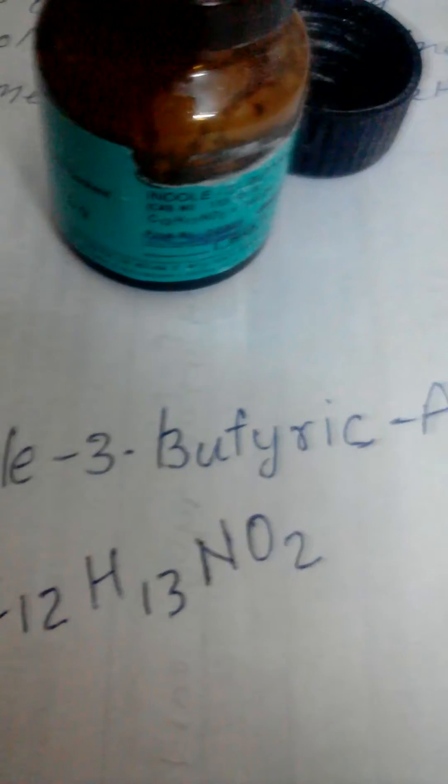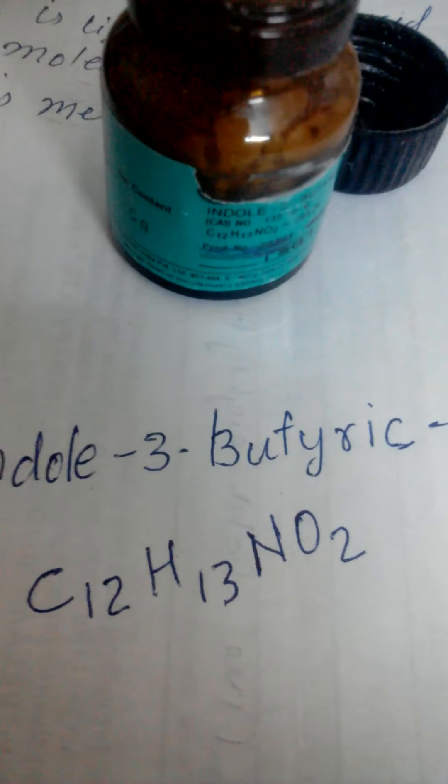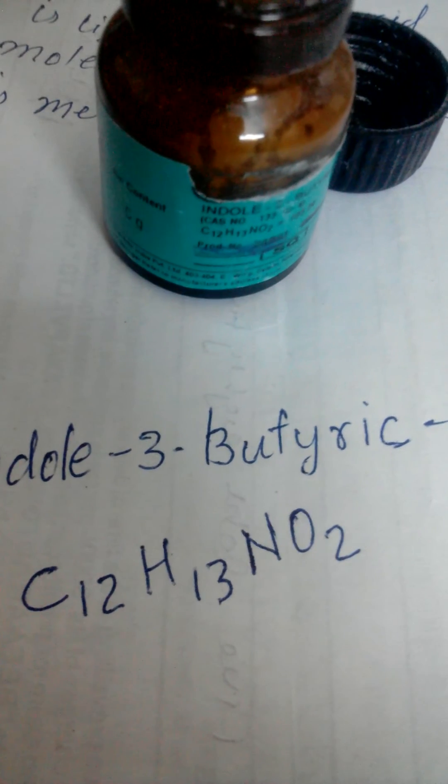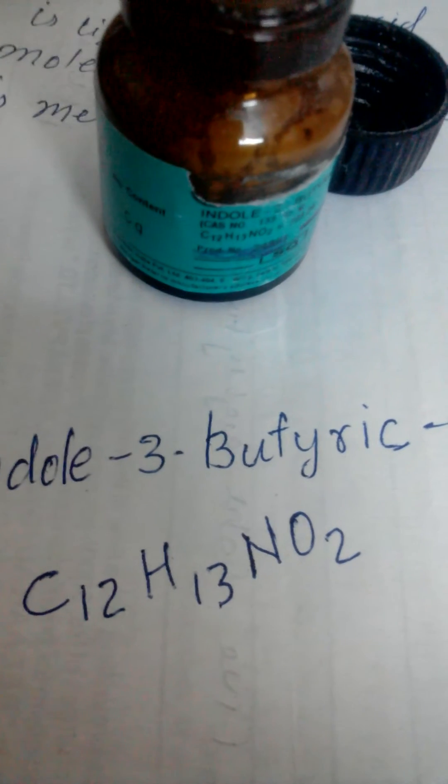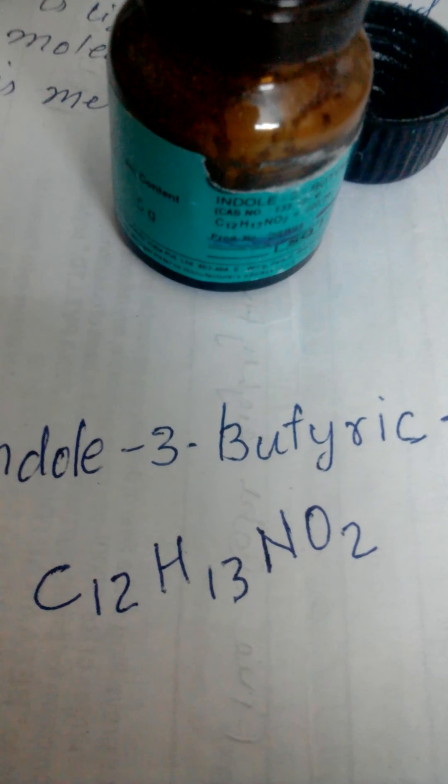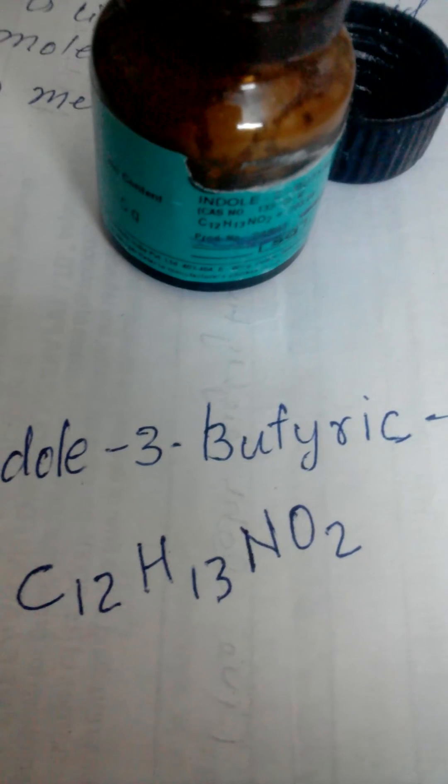Indole-3-butyric acid - this chemical formula is C12H12NO2. Then take ethyl or methyl alcohol, 99% pure, 50 ml.